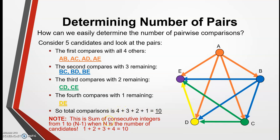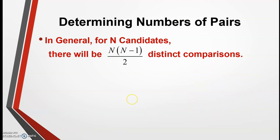This leads to our formula: to determine the number of pairs for N candidates, we take N times (N − 1) divided by 2. The dividing by 2 eliminates duplicates. This is the same approach used in the Borda Count method.